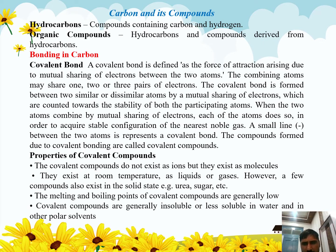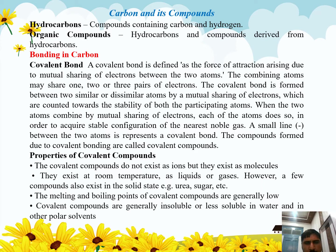A covalent bond can be formed between two similar or dissimilar atoms. When a covalent bond is formed between two similar atoms, it is called a non-polar covalent bond. When the covalent bond is formed between dissimilar atoms, it is called a polar covalent bond. In both cases, the electrons are shared mutually, contributing to the stability of both participating atoms.